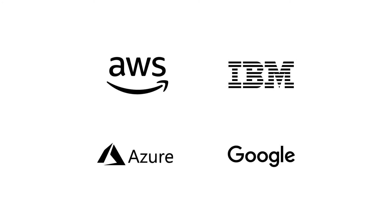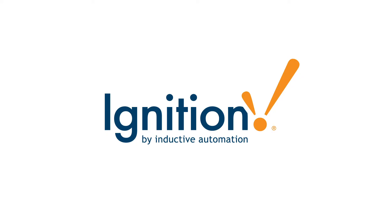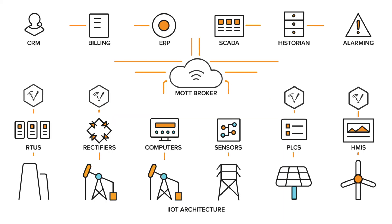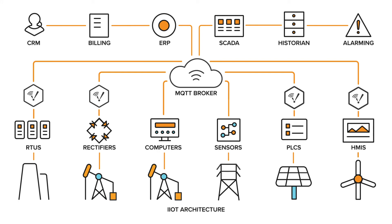Additionally, every major cloud provider — like AWS, Azure, IBM, and Google — all support MQTT so that you can use their powerful data tools for advanced analytics. All of this is built on top of Ignition, the world's first truly universal industrial application platform. Using the data from your new IoT infrastructure, you can create any industrial application like SCADA, alarming, MES, and more.